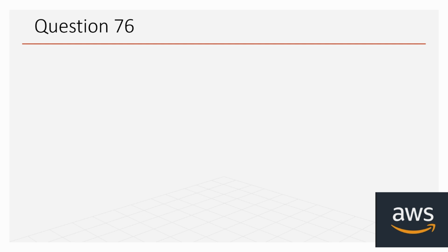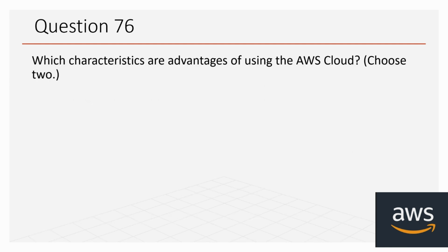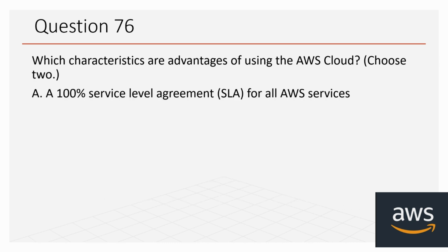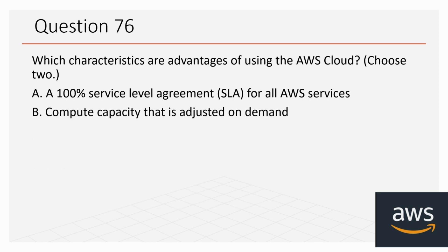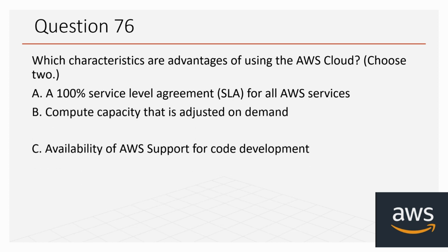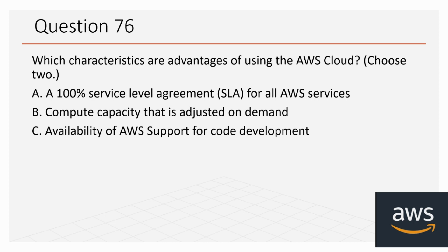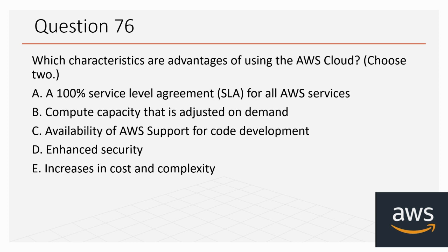Question 76: Which characteristics are advantages of using the AWS Cloud? Choose two options. A: 100% service level agreement for all AWS services. B: Compute capacity that is adjusted on demand. C: Availability of AWS support for code deployment. D: Enhanced security. E: Increases in cost and complexity. The correct options are B and D — compute capacity adjusted on demand and enhanced security.